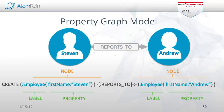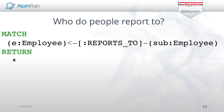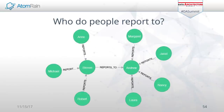If we look at the property graph model for a reporting structure — something that could be very deep within an enterprise — Stephen is a node, reports to Andrew. We have Cypher to create an employee, set the property of first name Stephen, 'reports to' employee first name Andrew. If I wanted to ask the question of who do people report to, I use 'match' — some employee 'reports to' another employee — then return them all. This shows all people that report to other people.